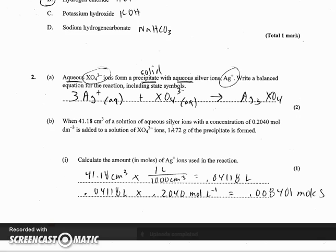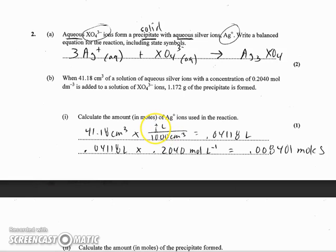Number two, this one gave some people trouble, and it really shouldn't have. It tells you that you have aqueous XO4 3-. It doesn't matter what is attached to it. It's a polyatomic ion. It's aqueous, so the positive metal has fallen off. The X doesn't really matter either. They're going to ask you to figure it out later, but you know that overall it has a minus 3 charge. It's definitely a negative ion. It's going to form a solid precipitate with aqueous silver ion. So you've got an ionic compound, Ag+, and XO4 3-. So it says write a balanced equation for this.